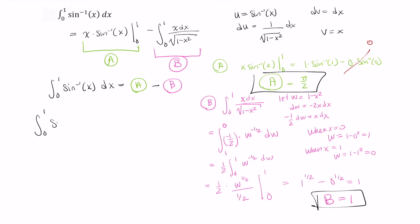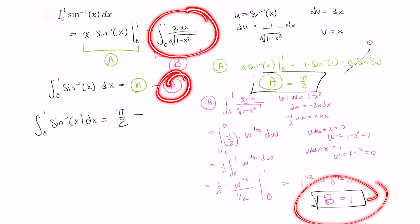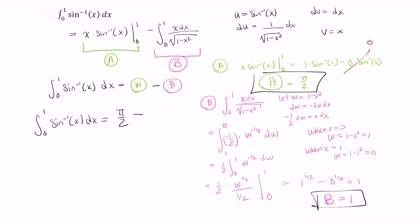This tells me that the integral from 0 to 1 of sine inverse of x dx is equal to pi over 2, and that's from here. And then this minus sign we just kept, so I'm going to move that down, minus the value that B came out to, and B was this integral, and B was just 1. So minus 1.